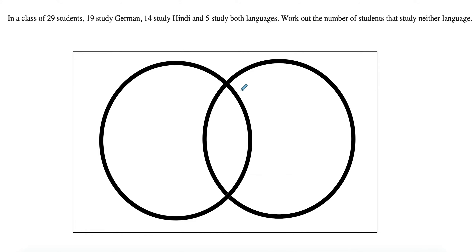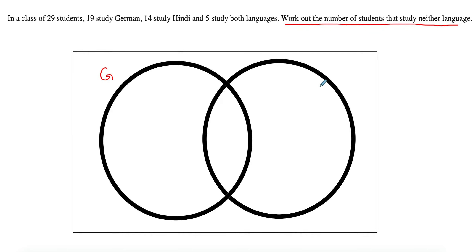I would encourage you to pause this video and try to fill in the Venn diagram. Usually questions come up asking you to work out how many study neither — it's much easier to see through a Venn diagram. So I'm going to set up one for the German language and Hindi language.